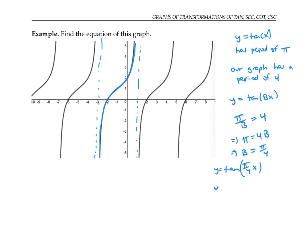The left by one I can accomplish by writing x plus one when I have the pi over four factored out. The up by one I get by writing a plus one on the outside.